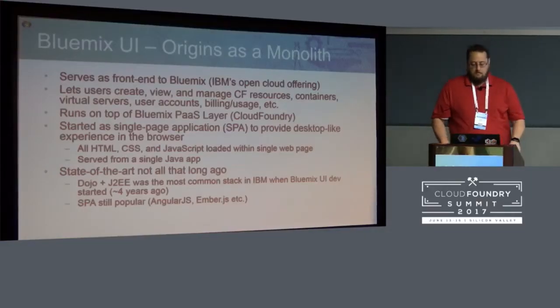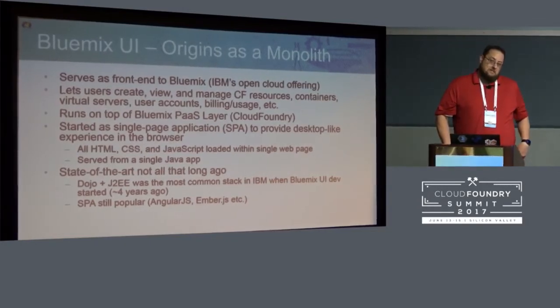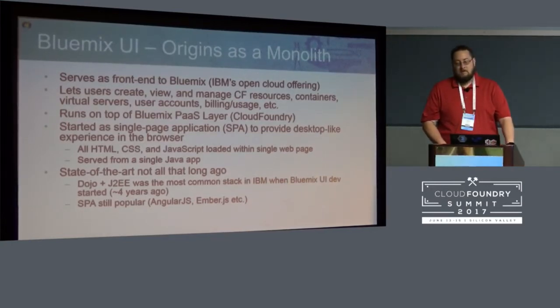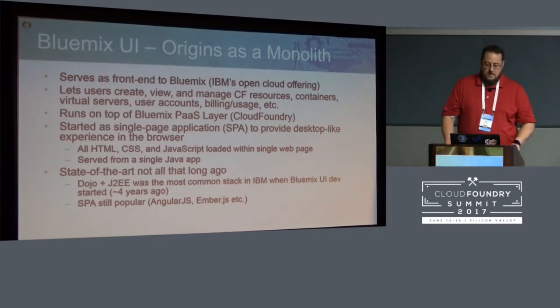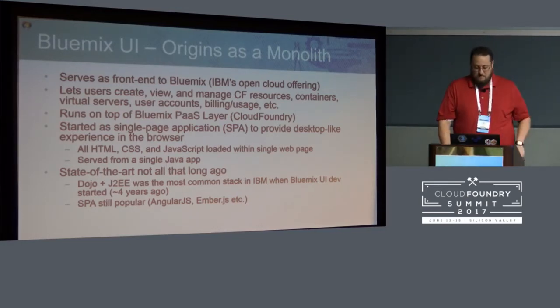It started as a monolithic app — a single page application. All the HTML, CSS, and JavaScript had to be loaded to the page at once, in one HTML page, and this was all served by a single Java app, which was also deployed to Cloud Foundry. This was a common stack in IBM not all that long ago, where everyone was using the Dojo JavaScript framework for the UI piece and serving it with Java.